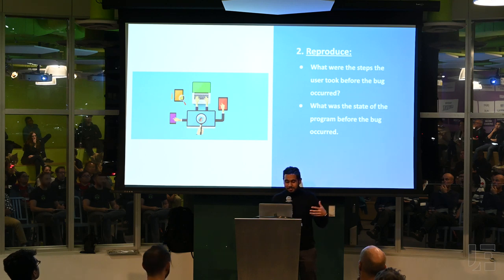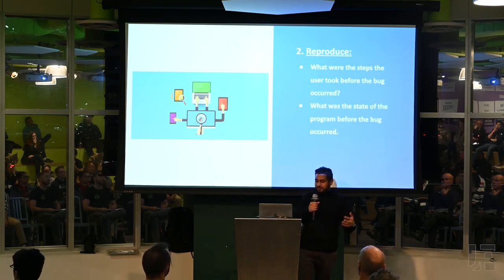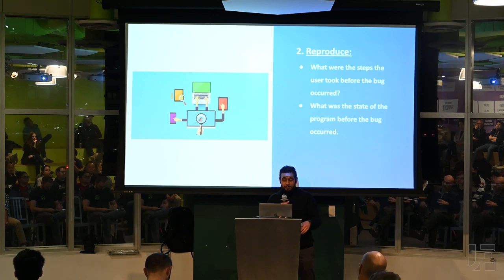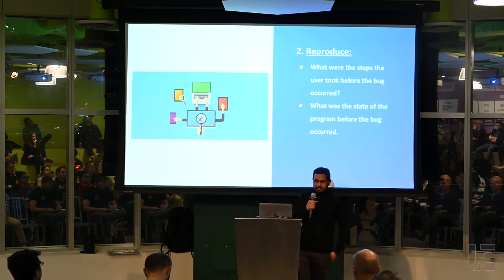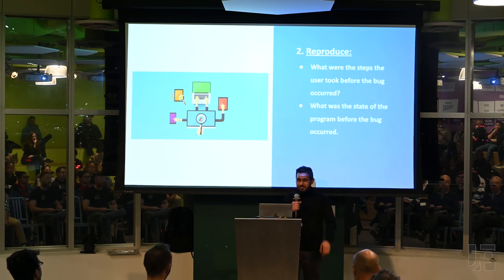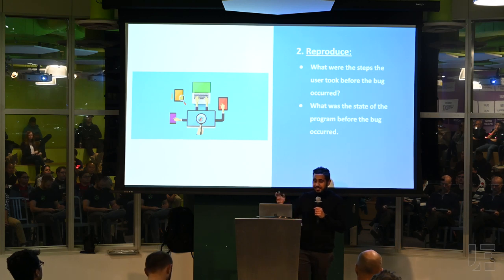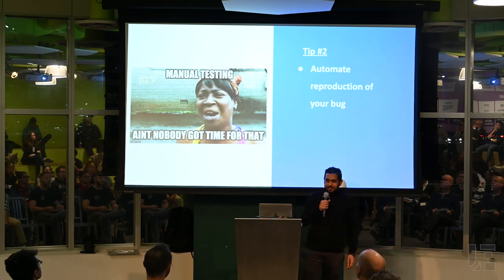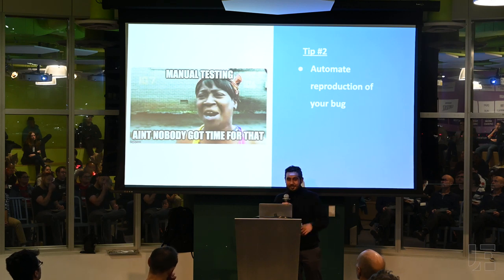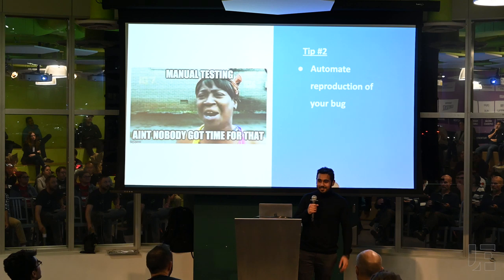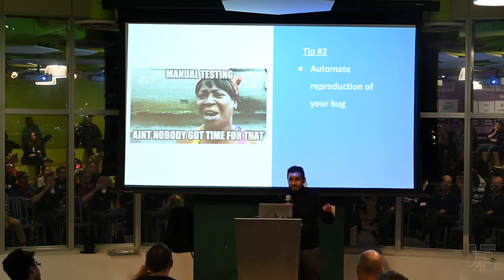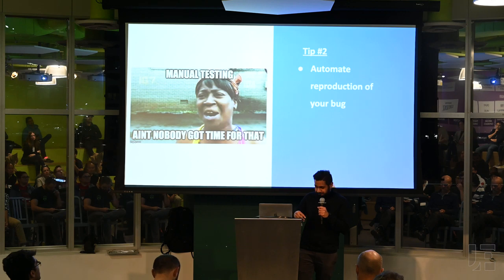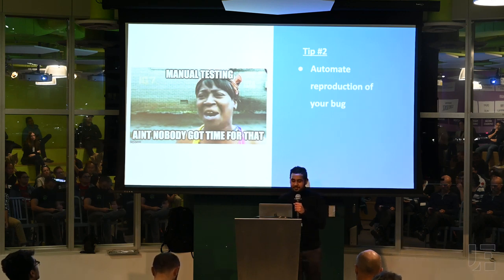The second step is reproducing a bug. In the first step, you understood in product terms what the user did and what they saw. You want to translate that into what was the state of the program before the bug occurred. Debugging really is a series of search problems — the first search problem is figuring out what inputs actually lead to this bug. The second tip is: you want to automate the reproduction of your bug. I fell into this trap myself — as soon as I reproduced a bug, I never automated it, so I'd have to go through a whole bunch of steps just to reproduce it all over again.